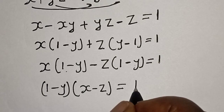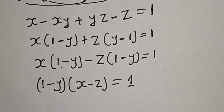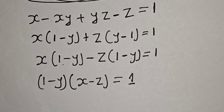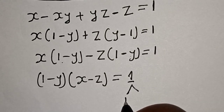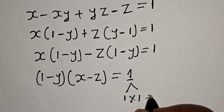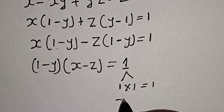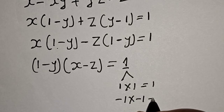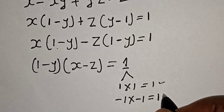Now since we are asked to find the integer solution, then one can be written as one times one, which equals one, or as minus one multiplied by minus one, which also equals one. So we have two cases here.